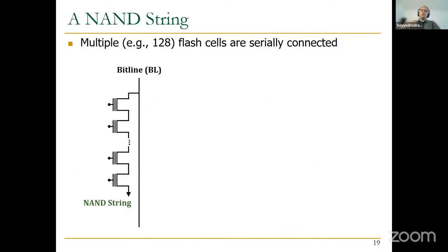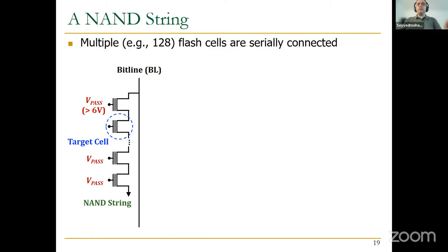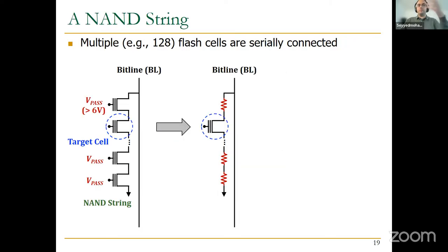Multiple Flash cells — for example 128 — that are serially connected are called a NAND string. In a NAND string, to target one specific cell you apply V_pass (a voltage high enough to turn on any cell regardless of its programmed state) to all other cells, while applying the reference voltage to the target cell to read or write it.